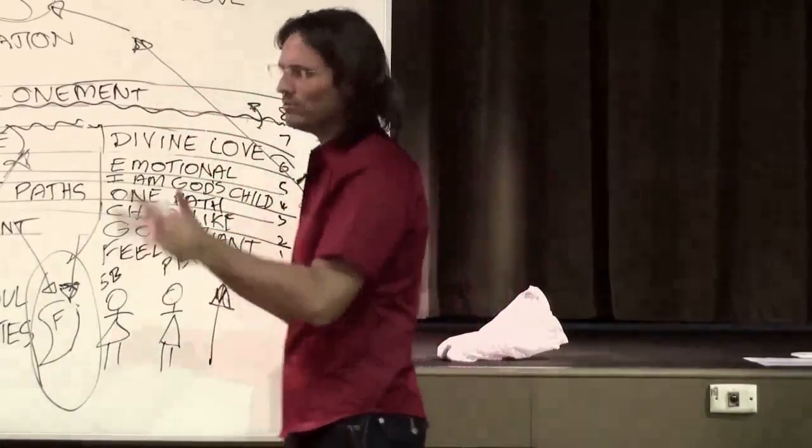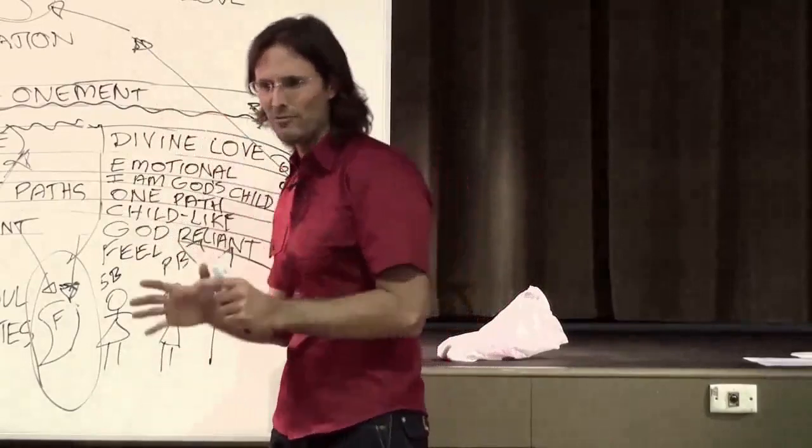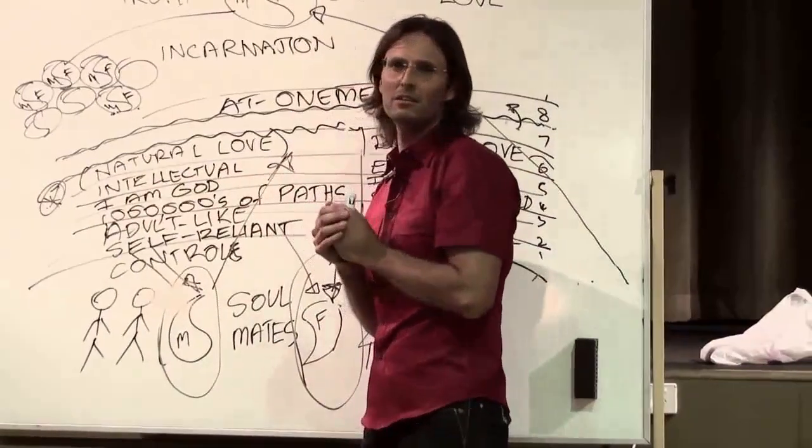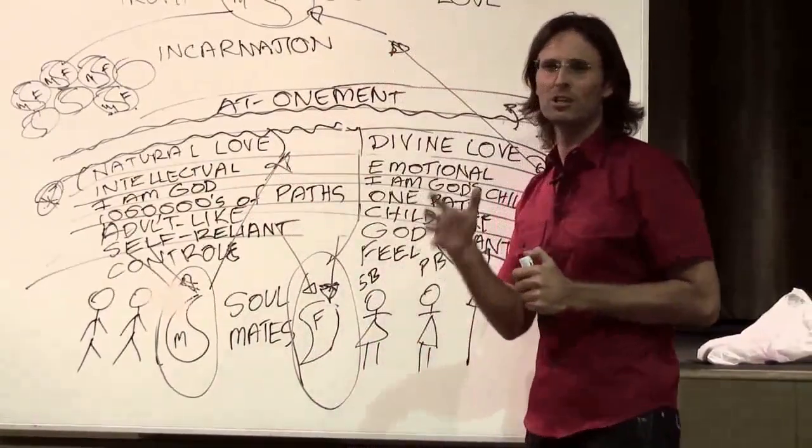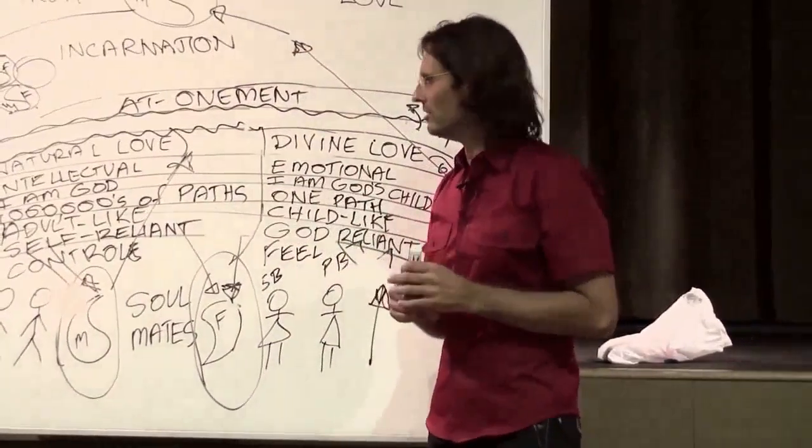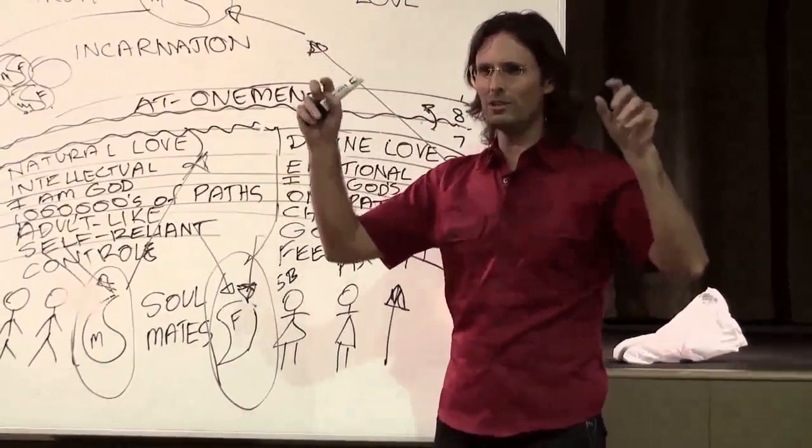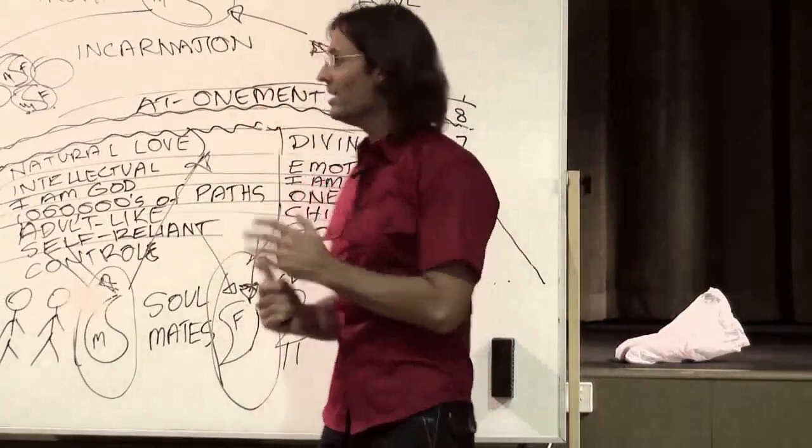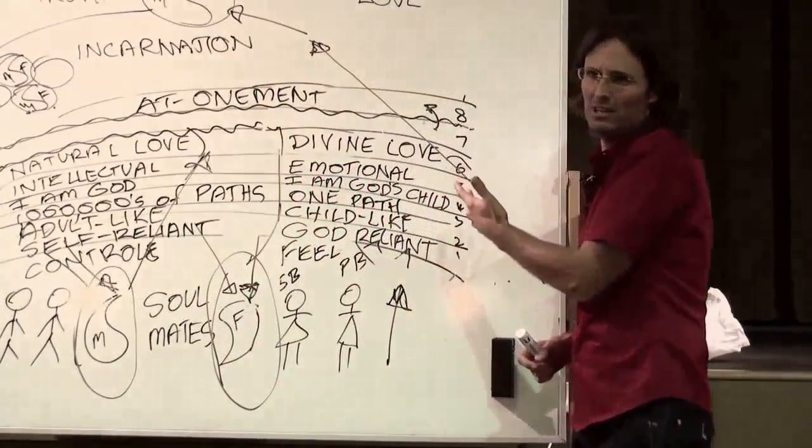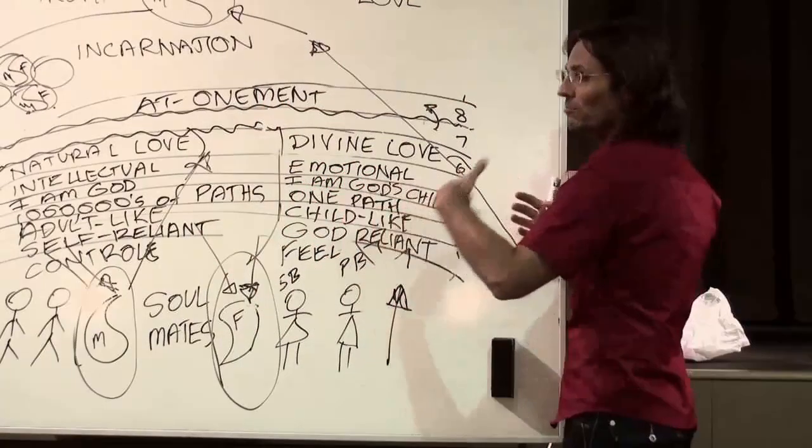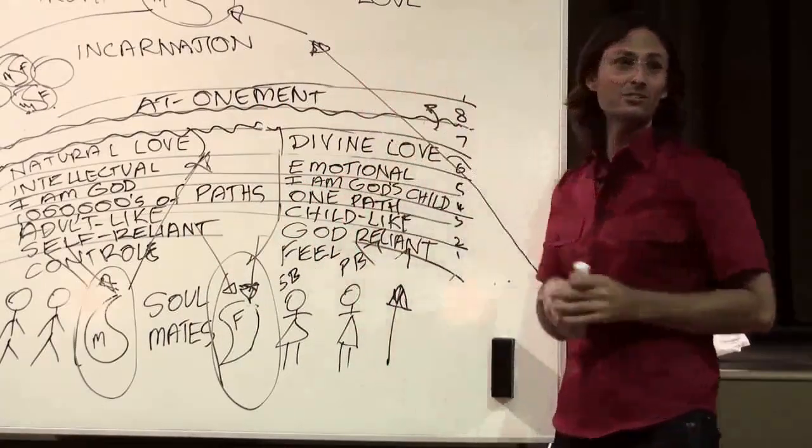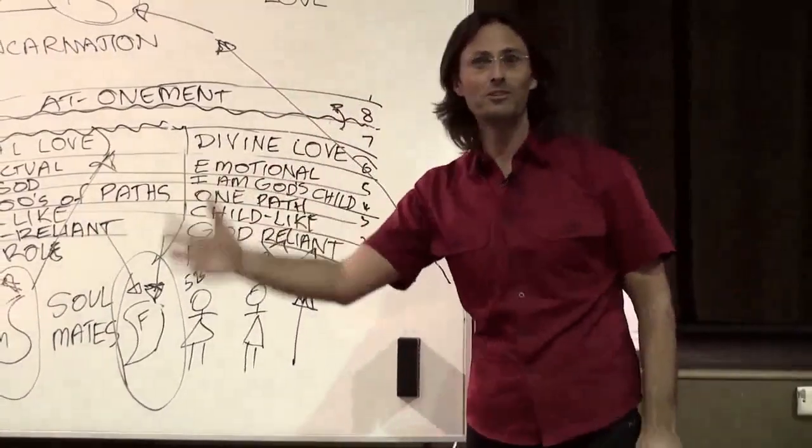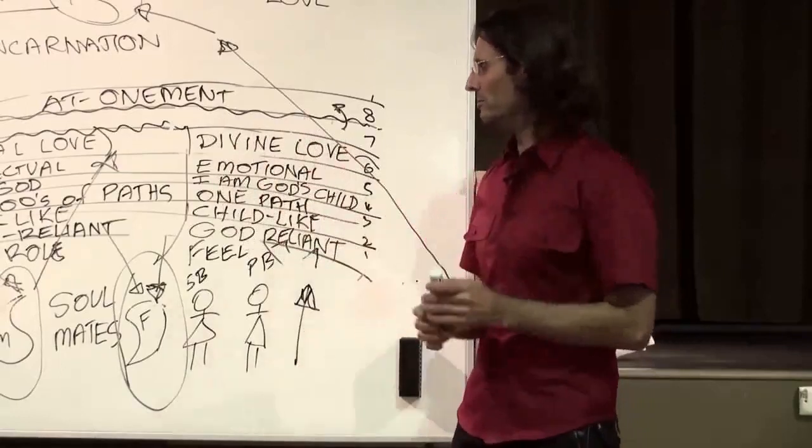The problem is that almost all of the so-called enlightened beings that have ever been on this planet have all been on the natural love path and many of them still are. Because they don't want to give up their concept of self-reliance, or they've given it up so much that they've given up their free will. And on this path you never give up your free will, ever. In fact, your free will multiplies and grows on this path. I said one of the reasons for incarnation is to fully realize your own free will. So giving it up is not going to be beneficial.